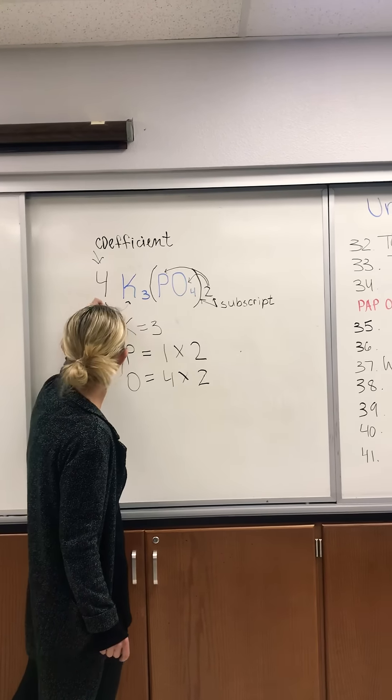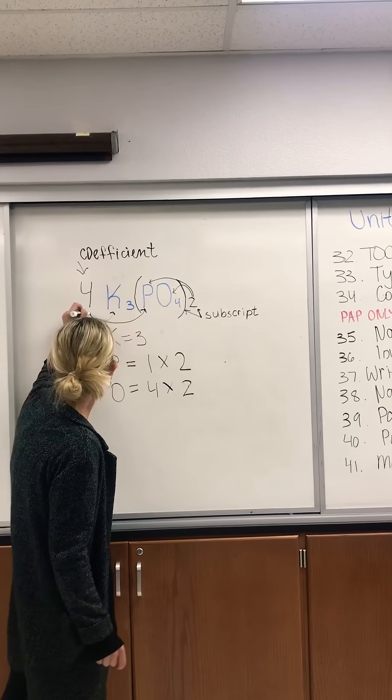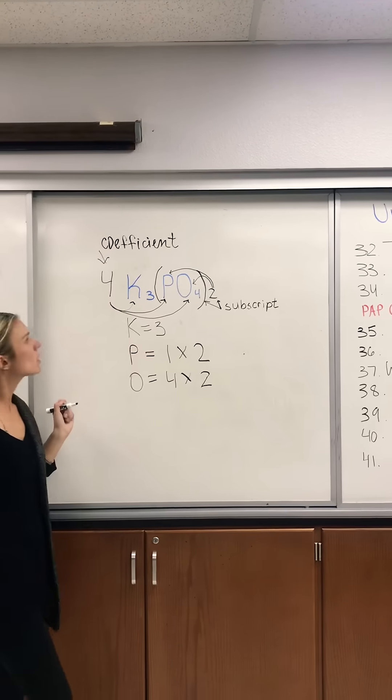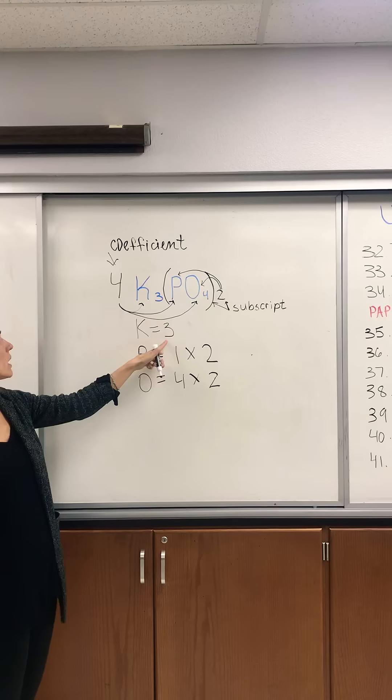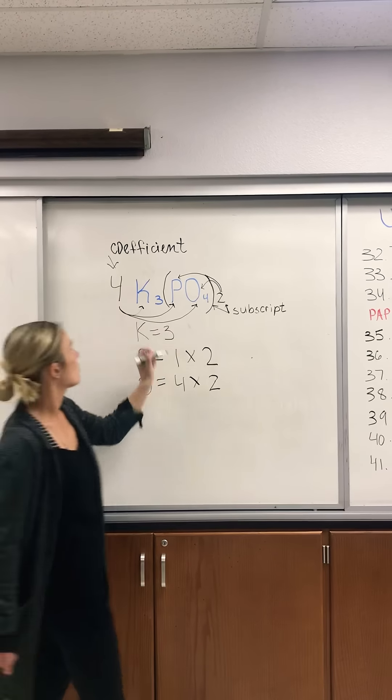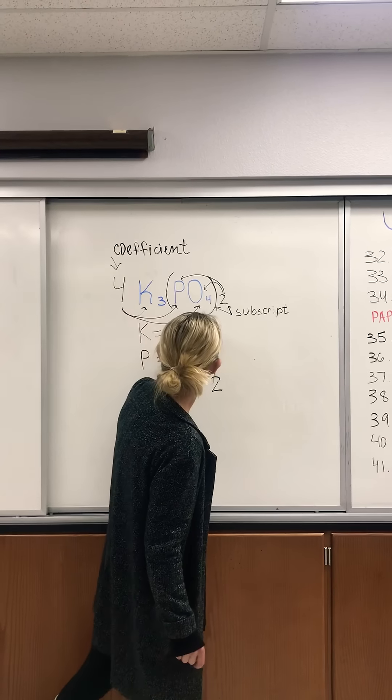So here, here, and right here. Now let's recount atoms. I had three K's. Because of this four, I'm going to put three times four. My answer is twelve.